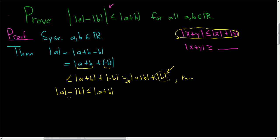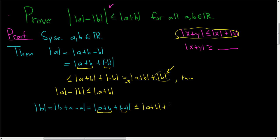Now we're going to do the same thing but with b. So the absolute value of b equals b plus a minus a, which can be rearranged as a plus b plus negative a. Applying the triangle inequality — with a plus b as x and negative a as y — this is less than or equal to the absolute value of a plus b, plus the absolute value of minus a, which is simply the absolute value of a.